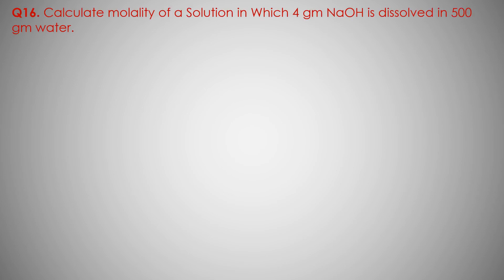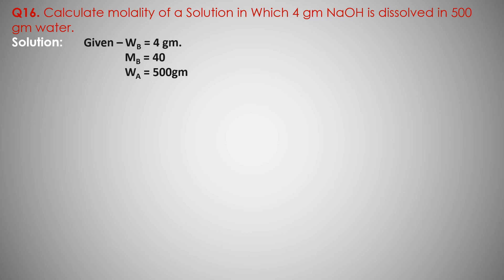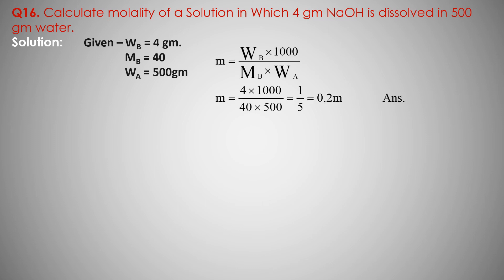Question complete. Question number 16: Calculate the molality of a solution in which 4 gram NaOH is dissolved in 500 gram water. Mass of solute NaOH is 4 gram, molecular mass of NaOH is 40. Mass of solvent Wa is 500 gram.